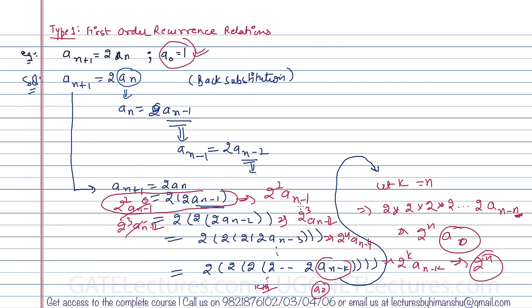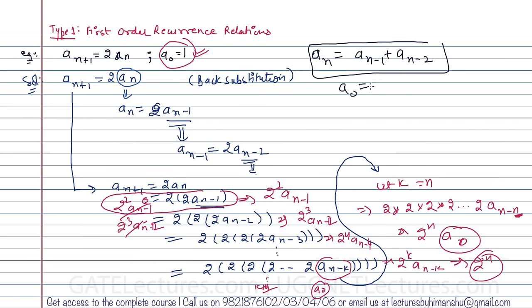However, if we take a more complex equation — for example, the Fibonacci series, where a(n) = a(n-1) + a(n-2) with a(0) = 0 and a(1) = 1 — solving it becomes quite a tedious task by back substitution alone.